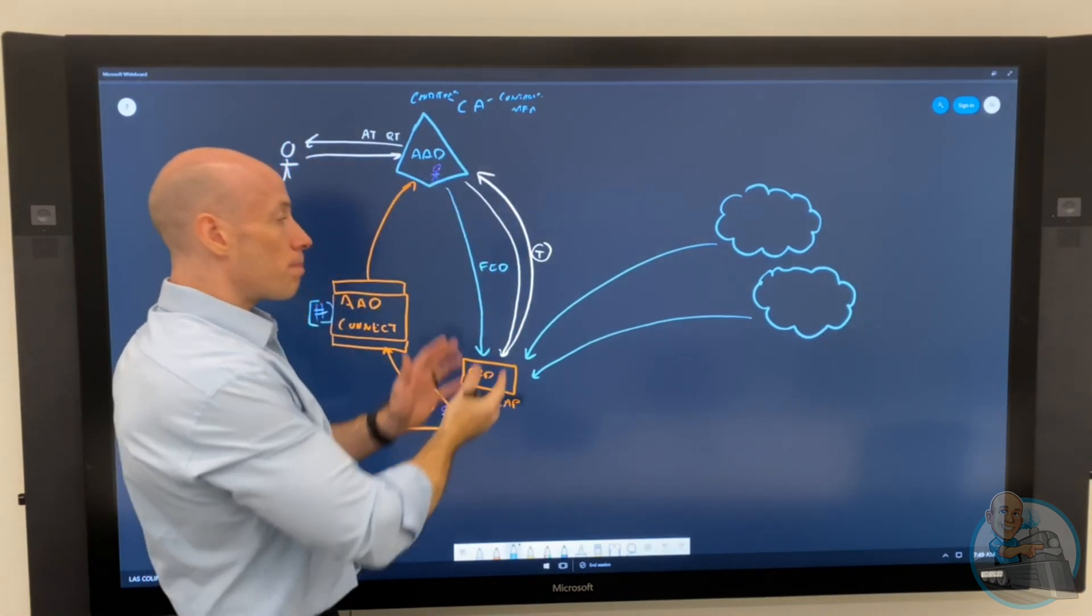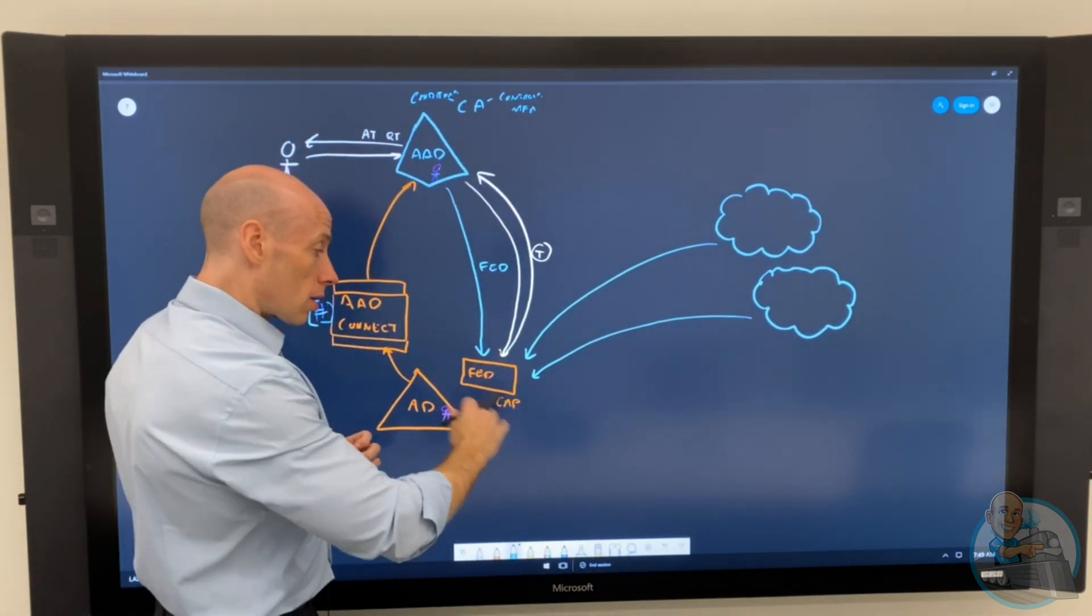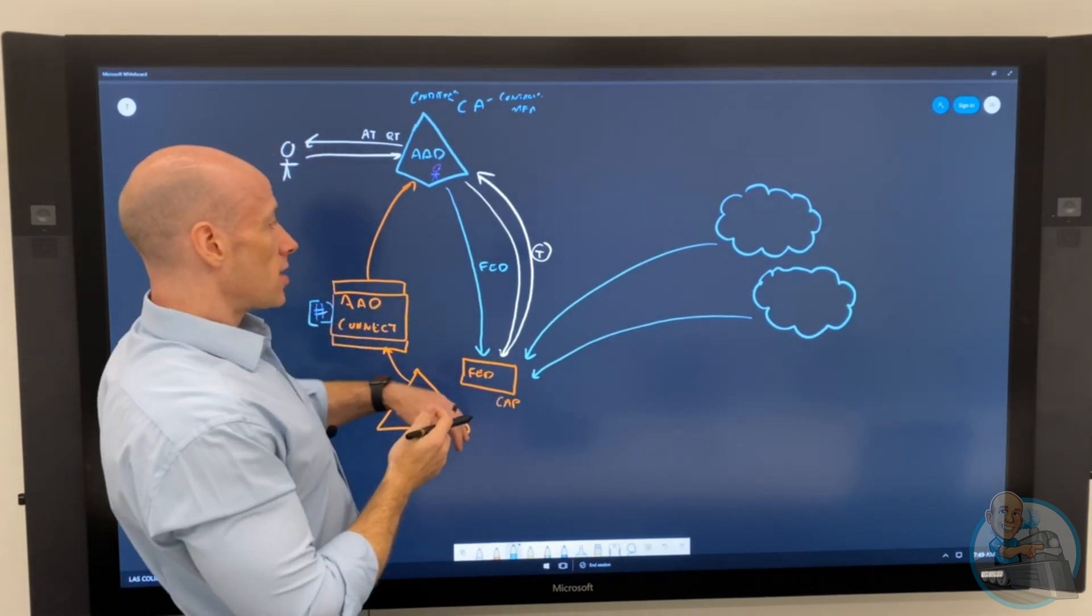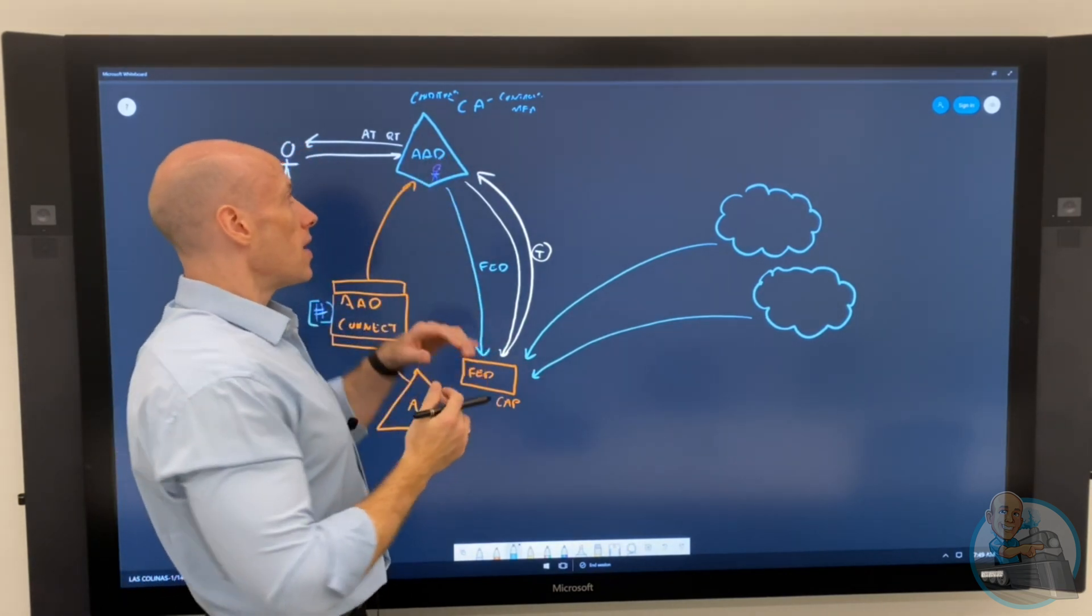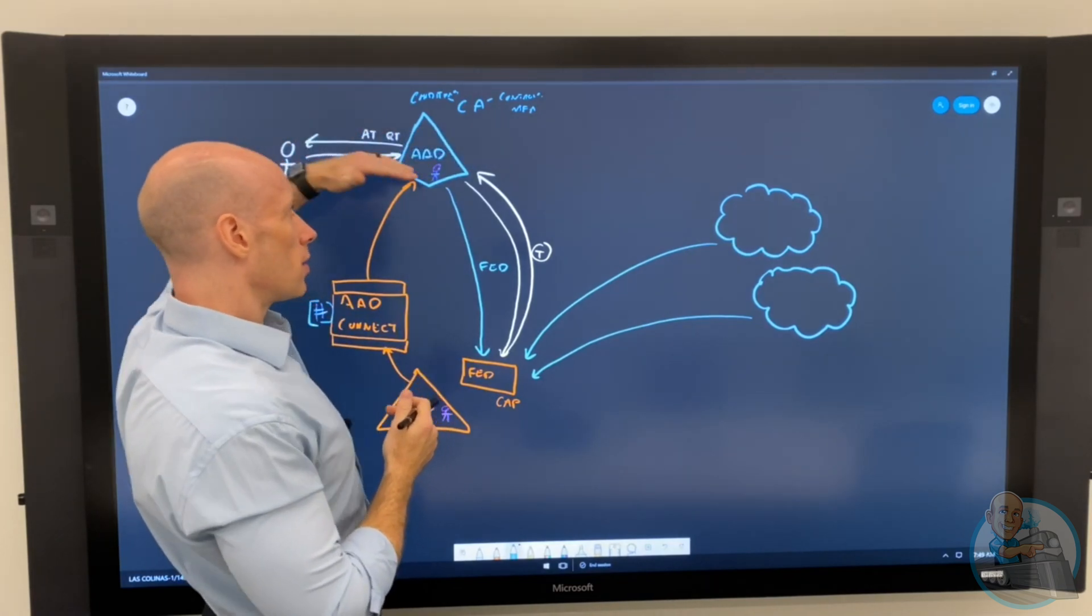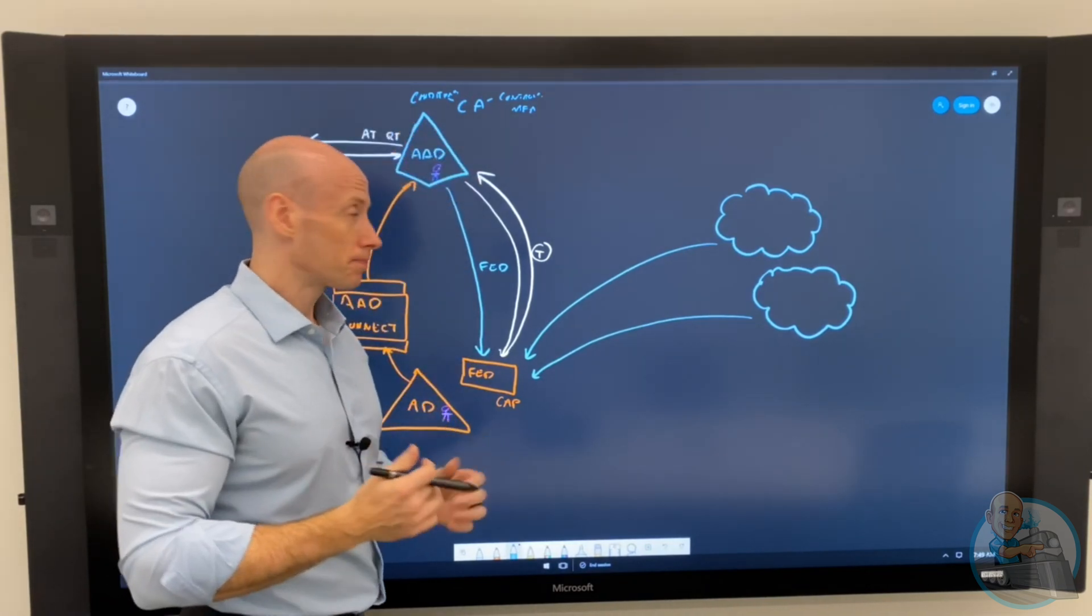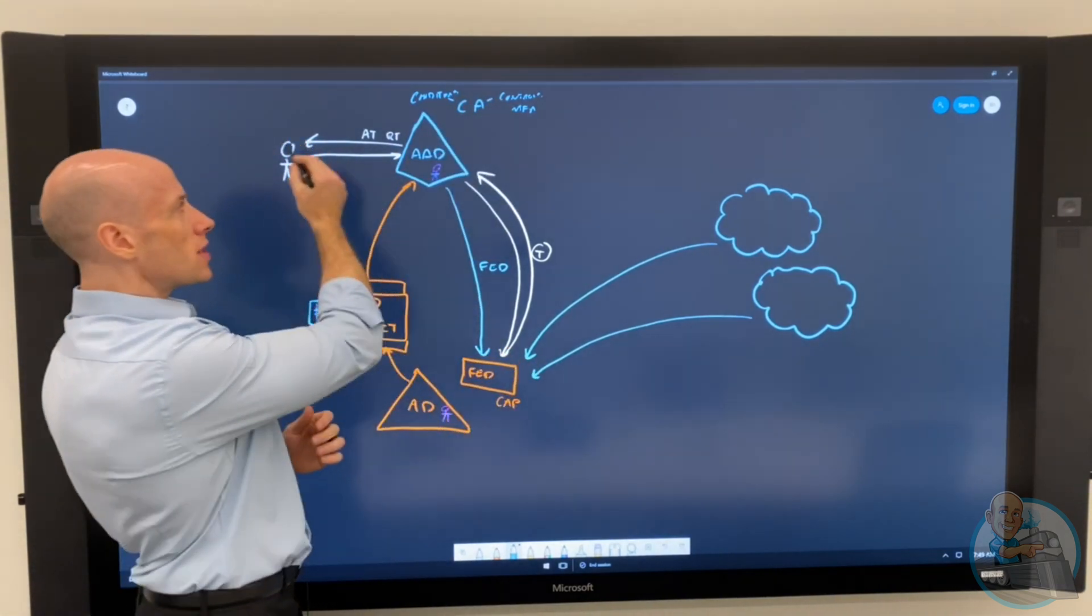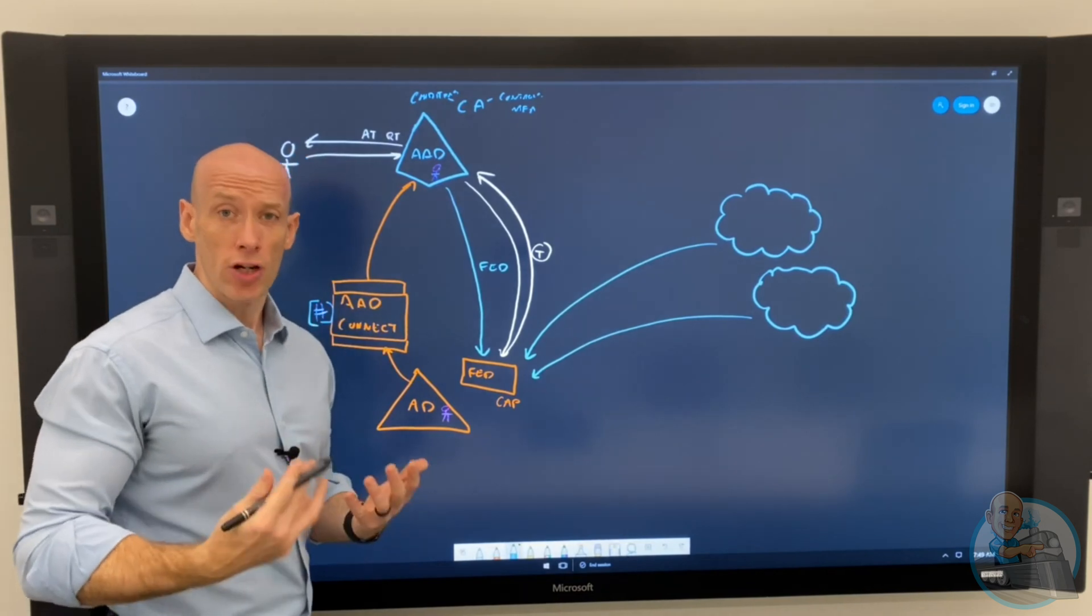So in that initial flow, they both got called. The client access policies on the federation got called, and then that's the authentication, the authn, and then kind of the authorization that's happening in Azure AD. So both sets of policies got called. Great. But the user now has this access token and refresh token.